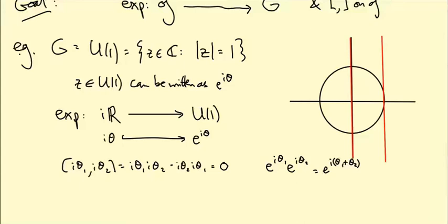So this vertical line now is passing through the point 1 in the complex plane. This is a tangent line to the circle, and that's always going to be true, that if we take little g, it's parallel to the tangent line to the group, in this case U(1), at the identity element.